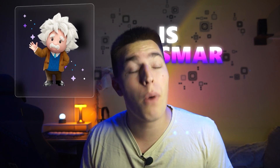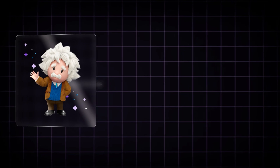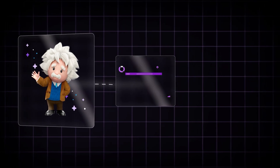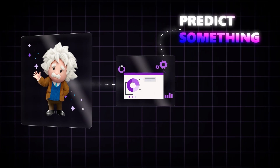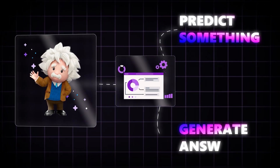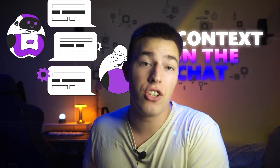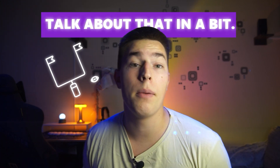Einstein is smarter. Rather than just storing information about your company, it learns about it — meaning it can use your data and classify new data, predict something with the current data it has, and also generate answers based on the data and the context in the chat, all while it stays within the guidelines you set.